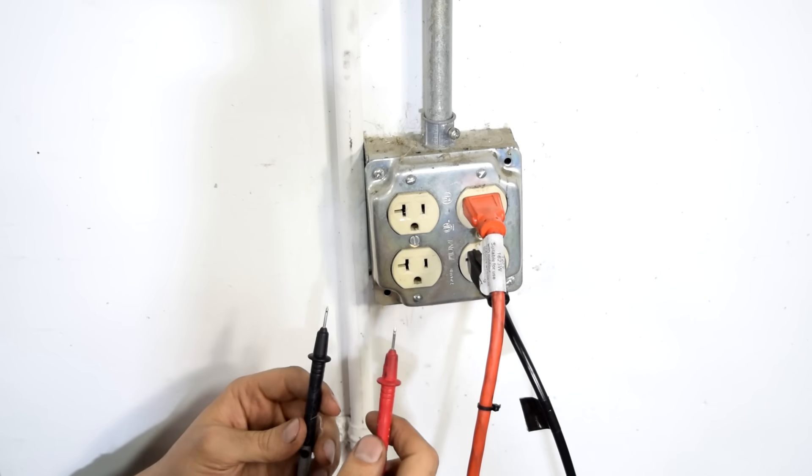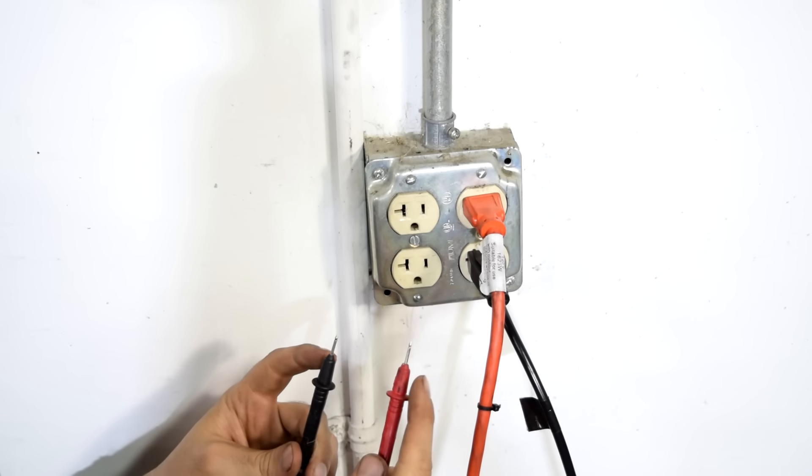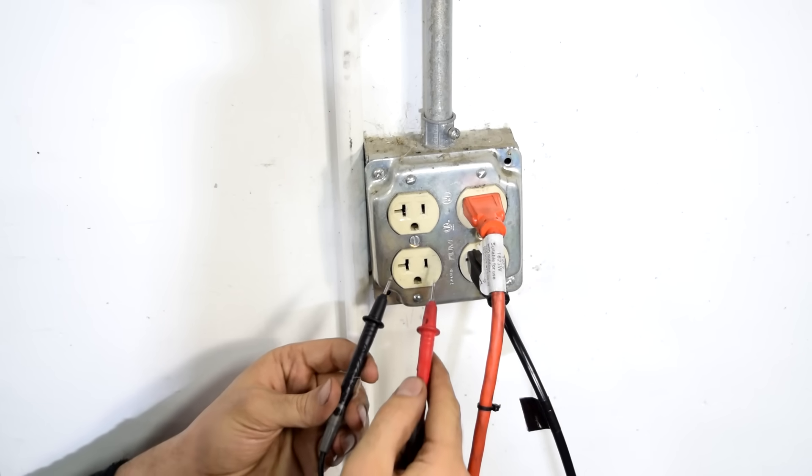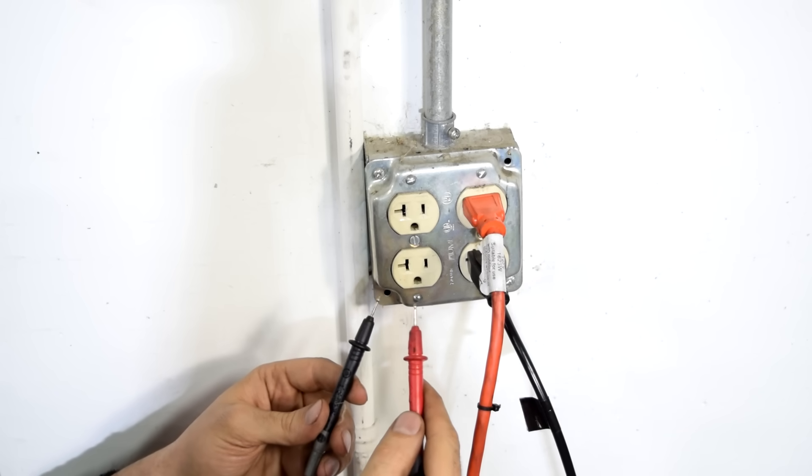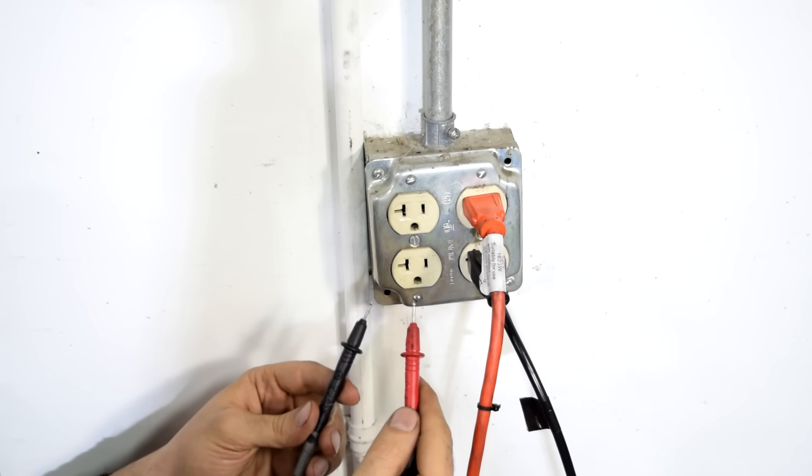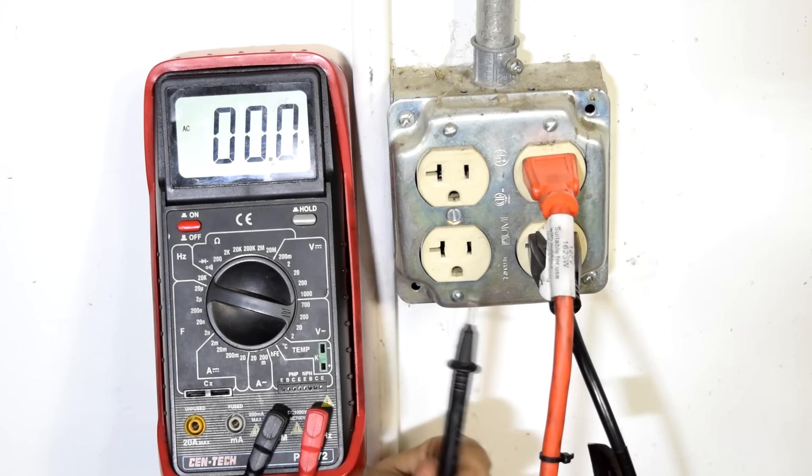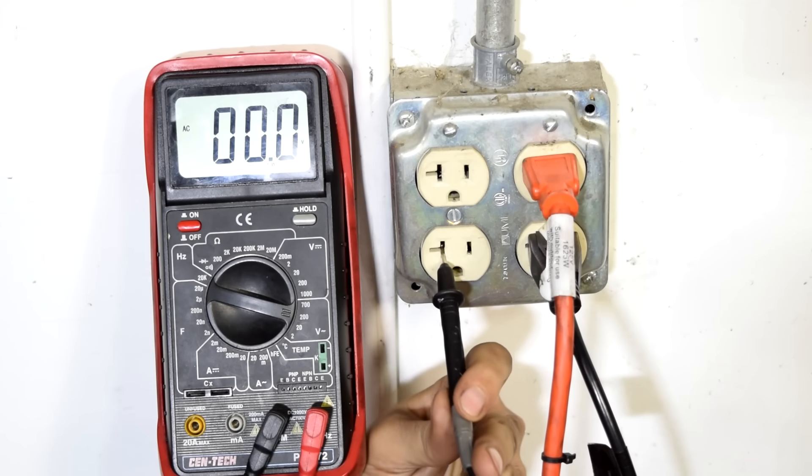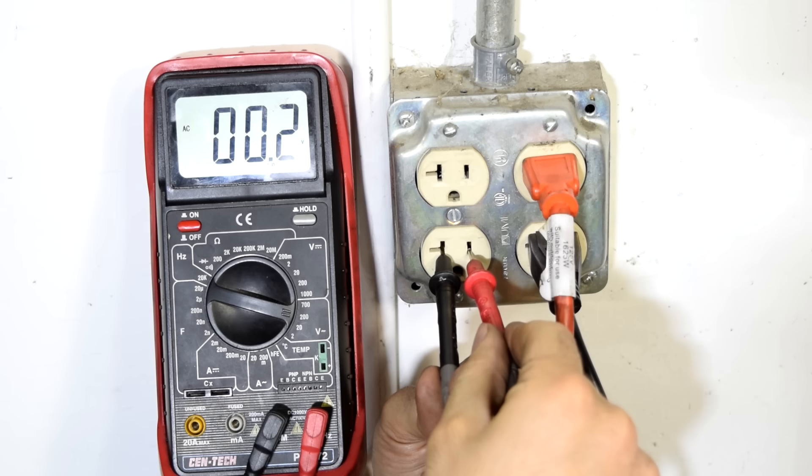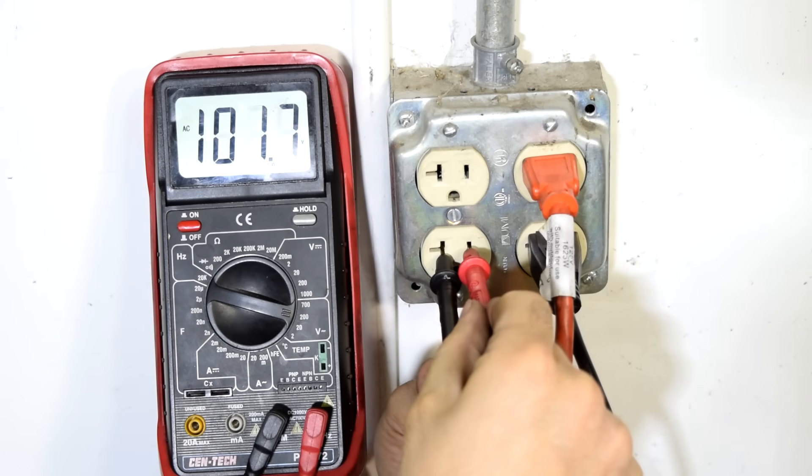Also when you go to take your measurement make sure your fingers are away from the tip of the test leads but also when you get near the socket that your test leads don't come into contact or near each other. So next we grab our ground test lead and we're going to put this in the bigger slot on our wall socket. And then we grab our red test lead and we're going to put it on this other side which is the power side. And as you can see we've got 118 volts coming out of this which is about right.